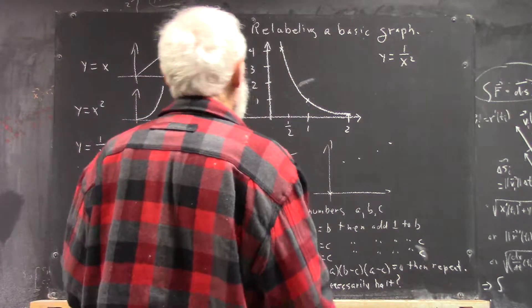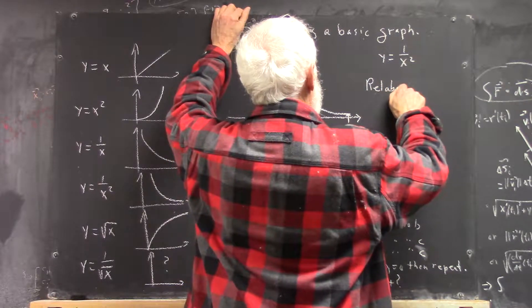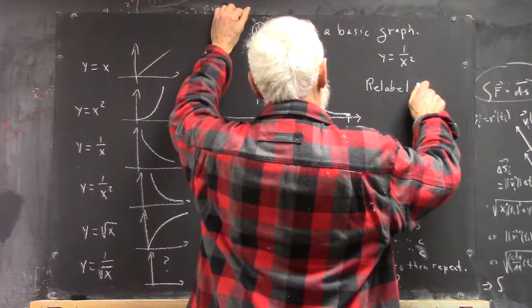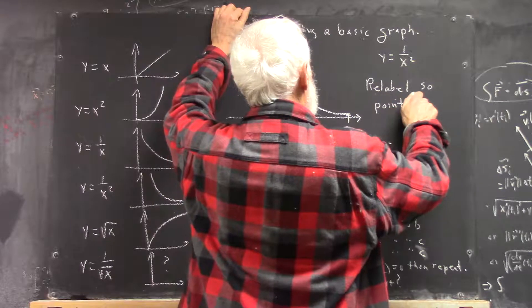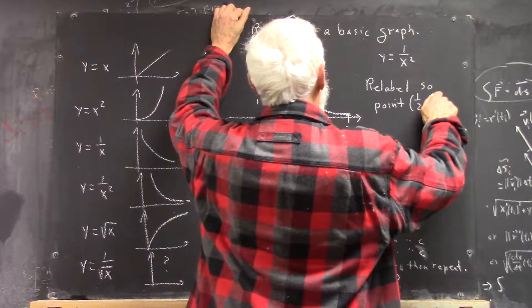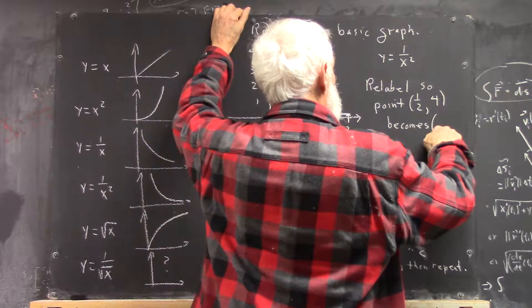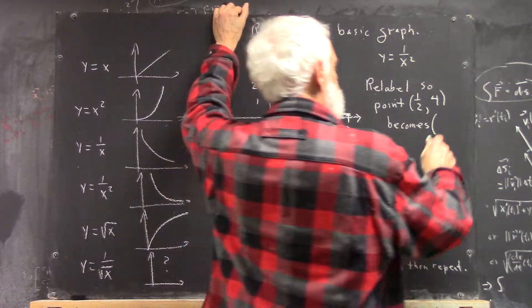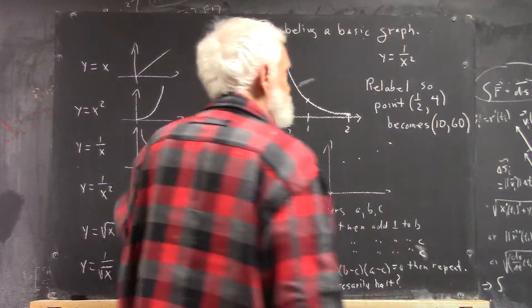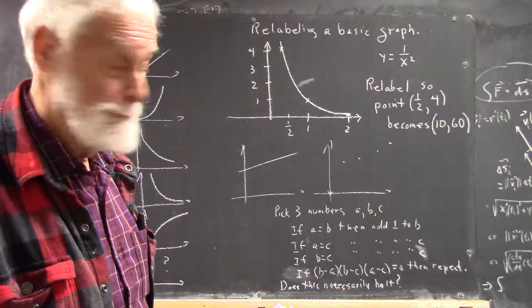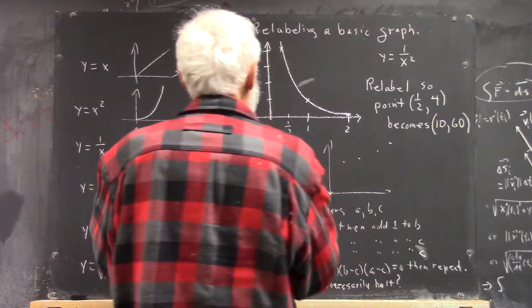The relabeling I want to do is relabel the graph so the point (1/2, 4) becomes, let's say, (10, 60). Okay, where's the point (1/2, 4)? Here's the point (1/2, 4).